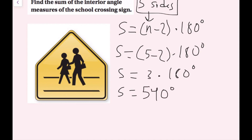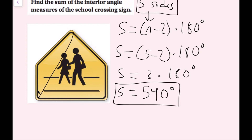So the total angles add up to 540 degrees for this crossing sign. Another way to do this is by breaking the shape up into triangles. You draw line segments from one vertex to all other possible vertices. Vertices is just the plural of vertex — the points at the end of each polygon. Starting from one vertex, I can draw a triangle right there.